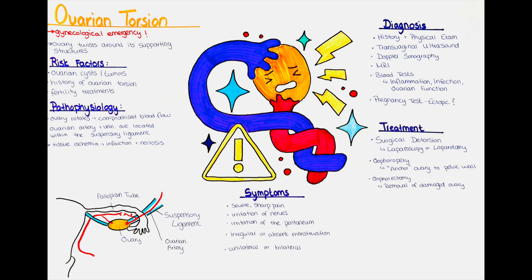The compromised blood flow and tissue damage in ovarian torsion can trigger an inflammatory response. This inflammation can irritate the peritoneum, so the lining of the abdominal cavity, leading to further pain and tenderness in the lower abdomen or pelvis. Some women may also experience changes in their menstrual cycle, such as irregular or absent periods.